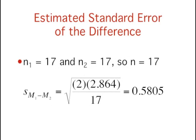We have the estimate of the population variances for our formula. Now we need to determine what value we will use for N. Both conditions have the same number of scores, 17, so our N is 17. Now we can calculate our estimated standard error of the difference, which equals 0.5805.